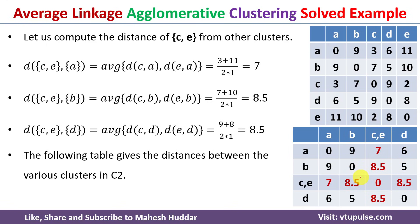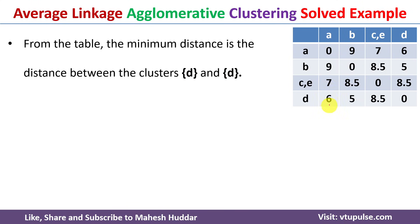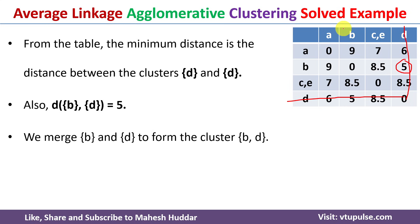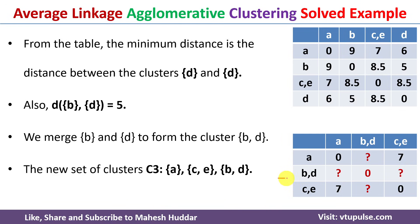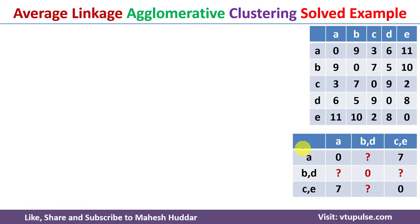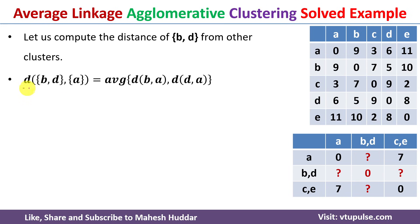From this updated distance matrix, we identify the minimum distance. The minimum is 5, between clusters B and D. So we remove the D row and D column and merge D into B, giving a new cluster {B, D}. Since we merged B and D, we no longer know the distances from BD to A and BD to CE, so we need to calculate them using average linkage again.